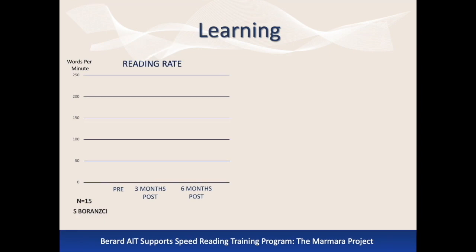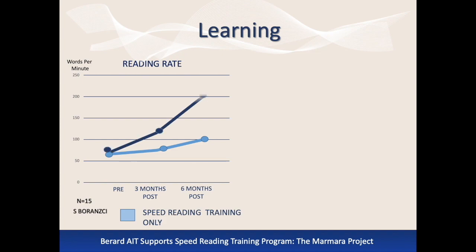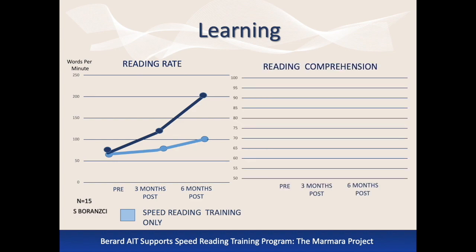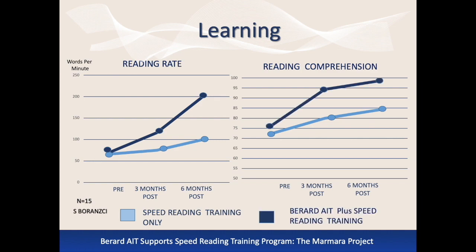The group that received only speed reading training did show progress when tested at three and six months after the training. However, those who received Berard AIT before the speed reading training had significantly better results. Reading comprehension was also measured before and after the training program. Again, we see improvement in the group that received only speed reading training, and significantly more progress in the group that received both Berard AIT and speed reading training. This group averaged nearly 100% comprehension while the speed reading only group averaged 85% comprehension.